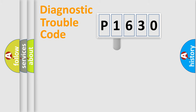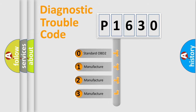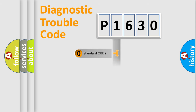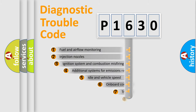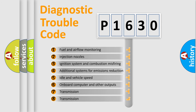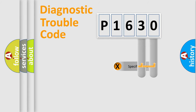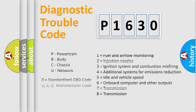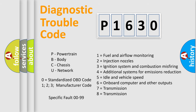This distribution is defined in the first character of the code. If the second character is expressed as zero, it is a standardized error. In the case of numbers 1, 2, or 3, it is a manufacturer-specific error. The third character specifies a subset of errors. This distribution is valid only for the standardized DTC code, and only the last two characters define the specific fault of the group.